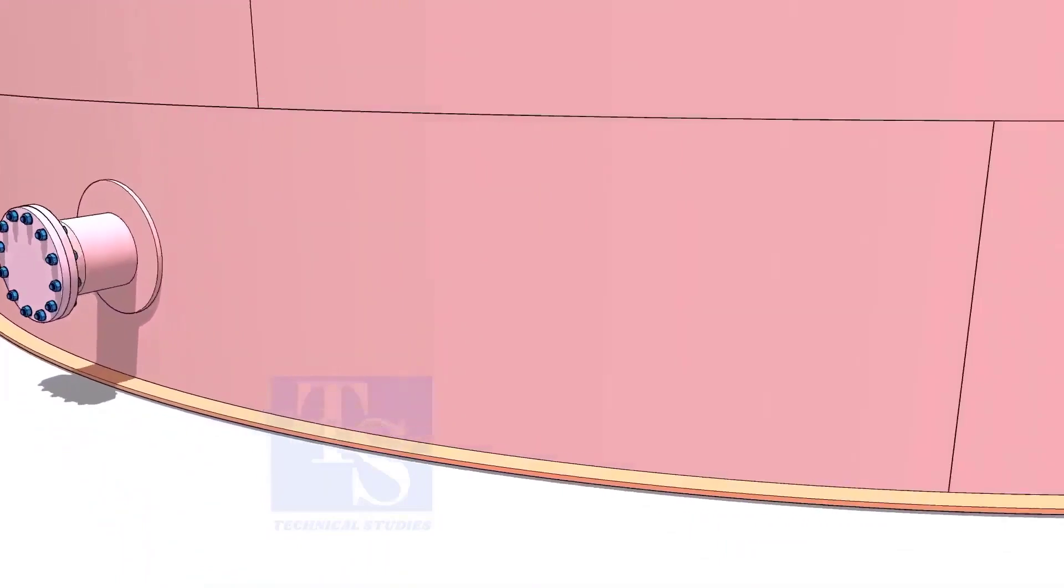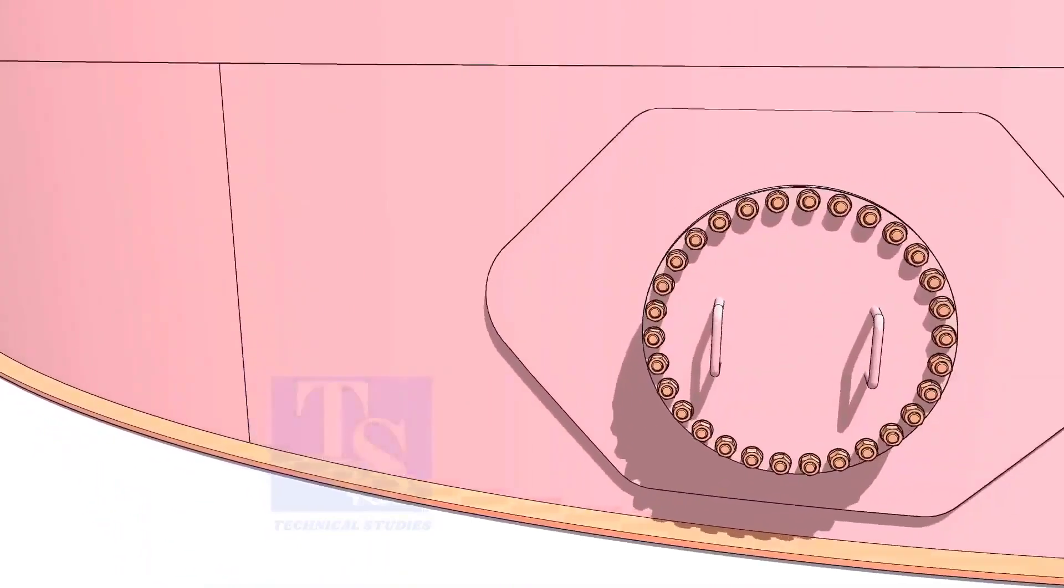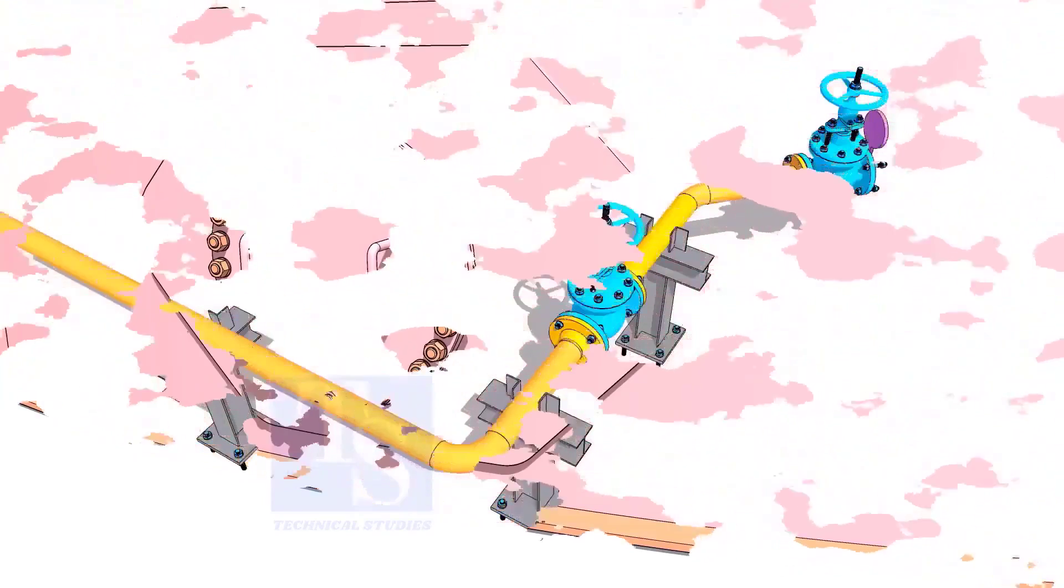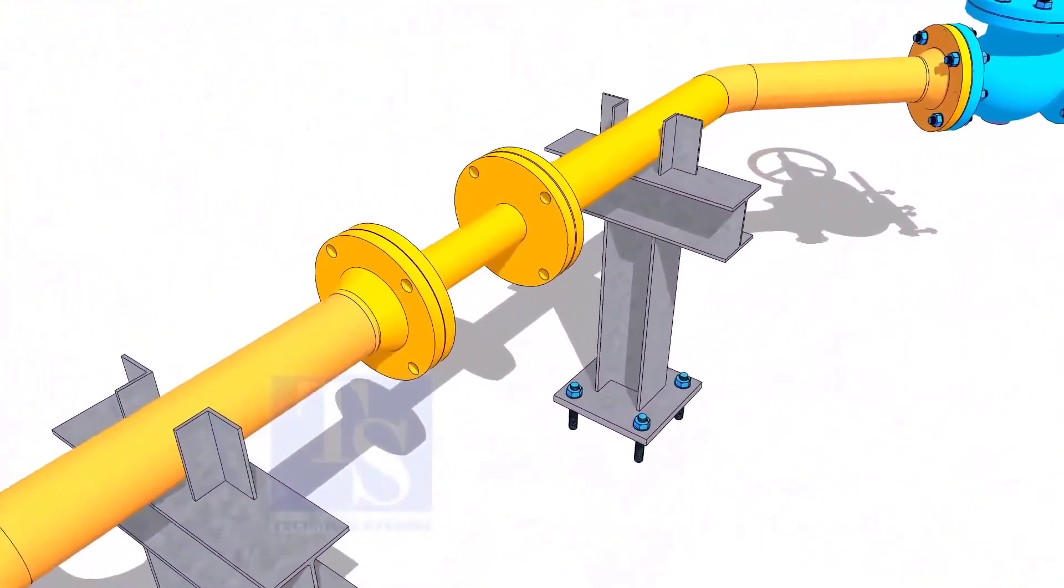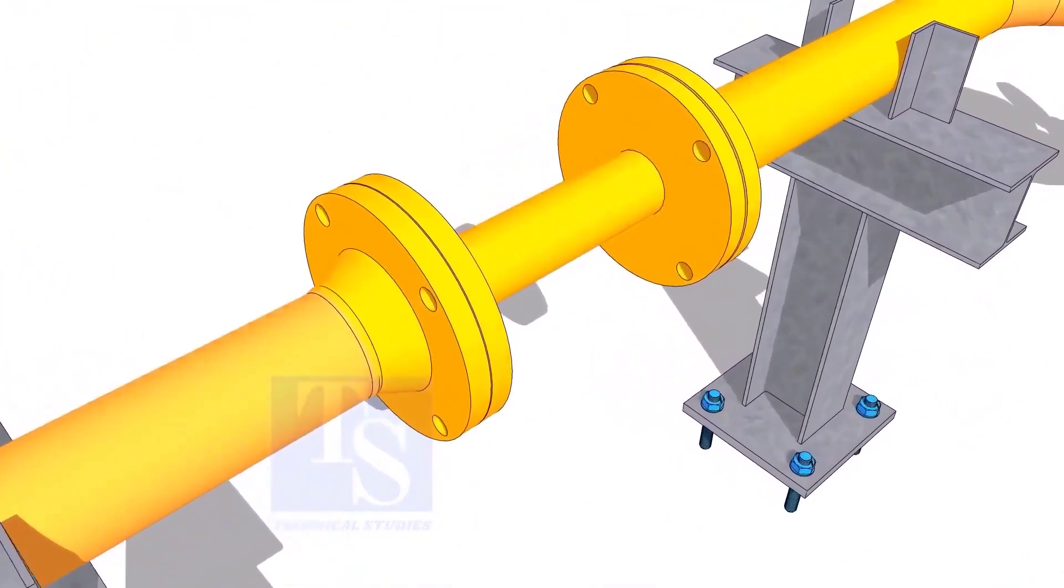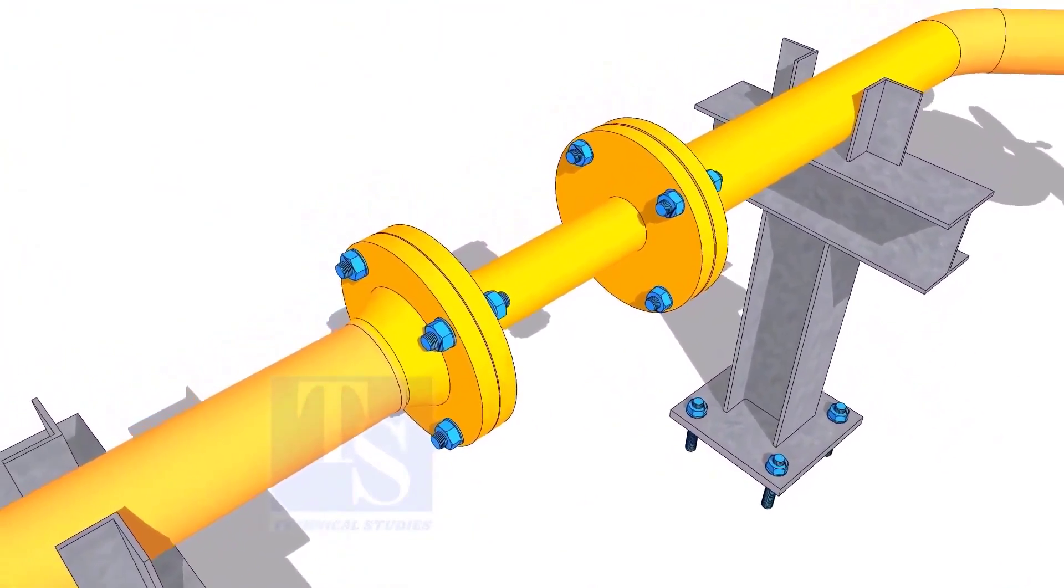Plate flanges are used for low-pressure services or to blind the nozzles of vessels, tanks, etc. for hydrotest purposes. Other use of plate flanges is making temporary spools to replace valves and equipment on a piping system.